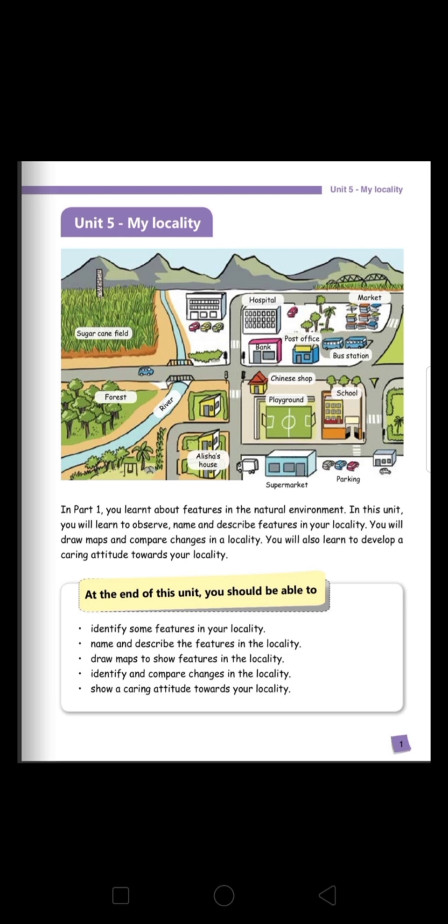Page 1 of the book, Unit 5, MY LOCALITY. Let us read. In Part 1, you learnt about features in the natural environment. In this unit, you will learn to observe, name and describe features in your locality. You will draw maps and compare changes in a locality.